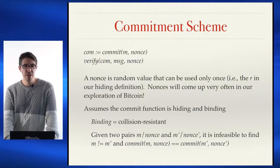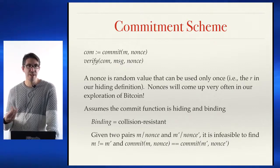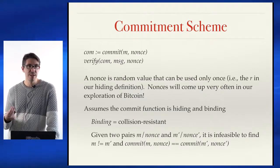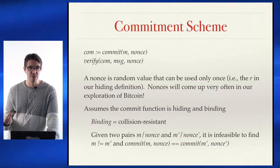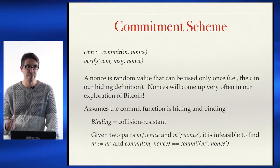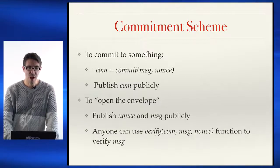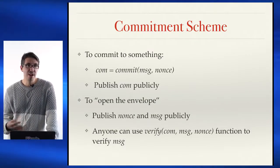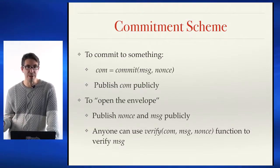If we assume that this commit function is hiding, I can commit a message and add a nonce to it, and it's going to be computationally infeasible — basically impossible — for somebody to find some other message and nonce that hashes to that same committed hash value. After I generate this hash, I publish it publicly.